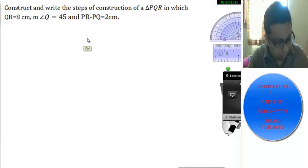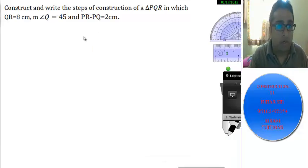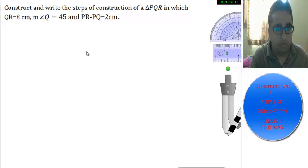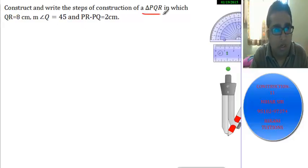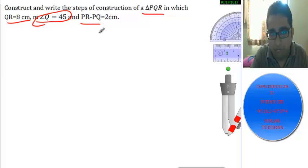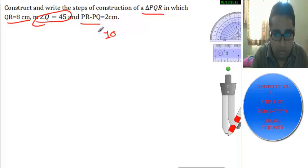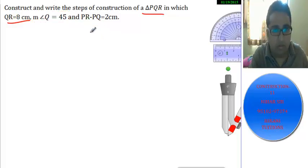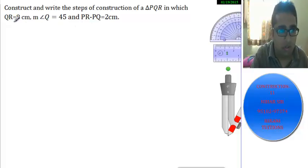Hello friends. In this video we will draw triangle PQR in which QR is equal to 8 centimeters, measurement of angle Q is equal to 45 degrees, and the difference is 2. As we also saw in the previous video and in construction 10, the same approach will be used here. Let's start drawing this construction.